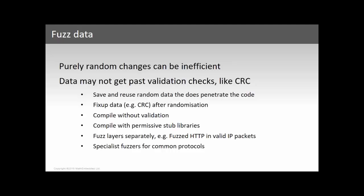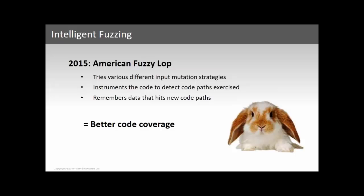You can also create stub libraries that effectively remove validation, fuzz the layers separately — for example fuzzing HTTP traffic inside valid IP packets so you're only actually fuzzing the HTTP layer — and using some or all of these techniques, there are specialist fuzzers for common protocols like HTTP.